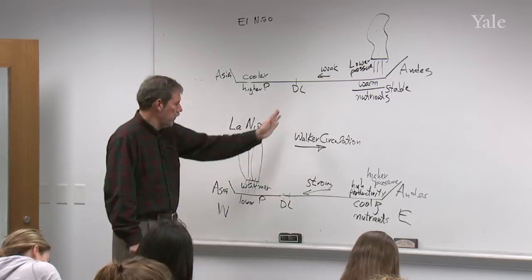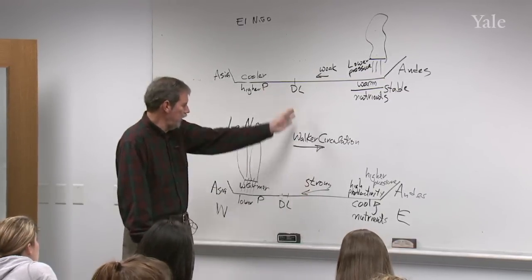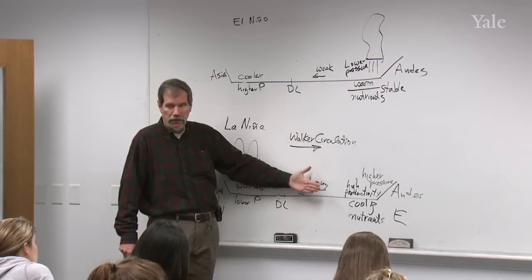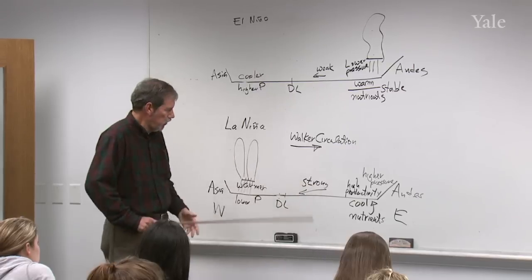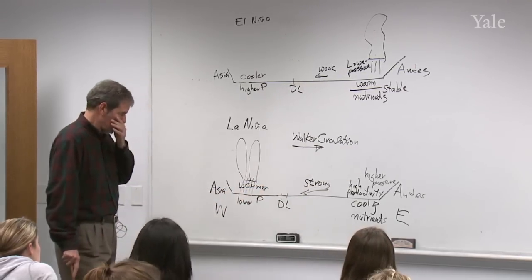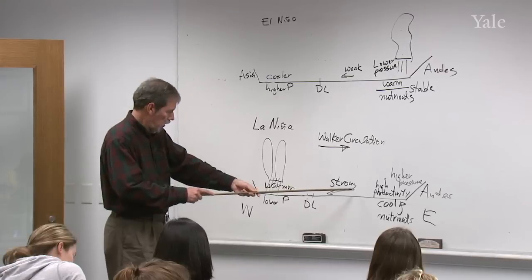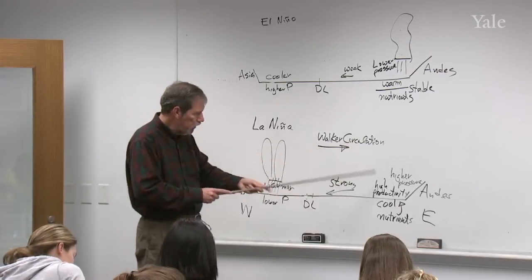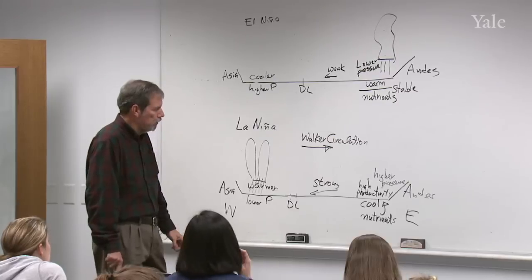The trade winds return aloft in what's called the Walker circulation. So remember, the Hadley cell you would see if I sliced it this way, across the equator. Here I'm slicing it along the equator. So we don't see the Hadley circulation, but we do see this Walker circulation. It returns the low-level easterlies and upper-level westerlies.